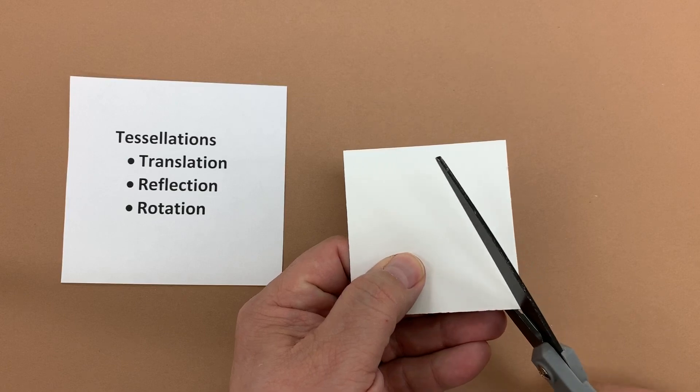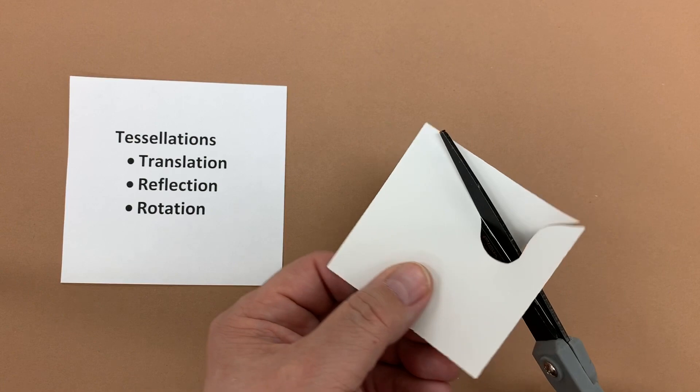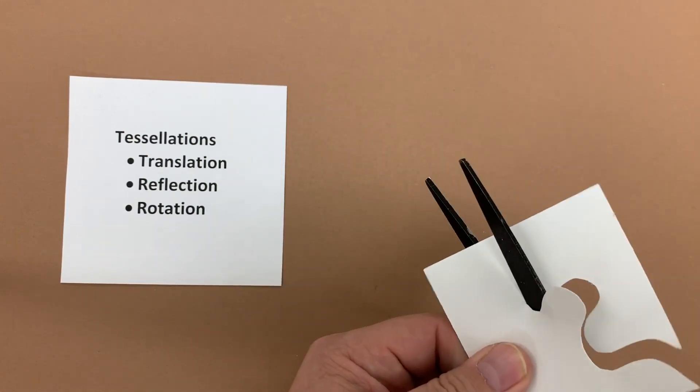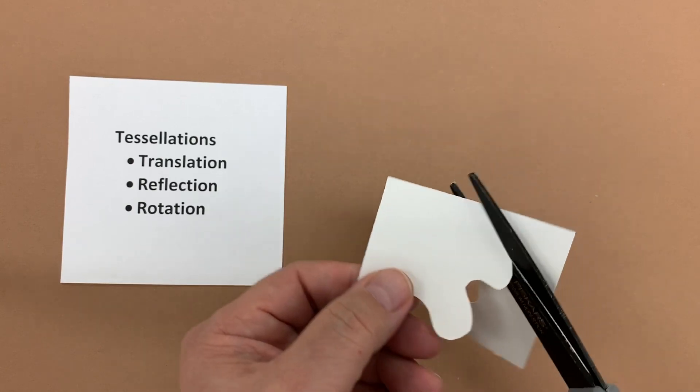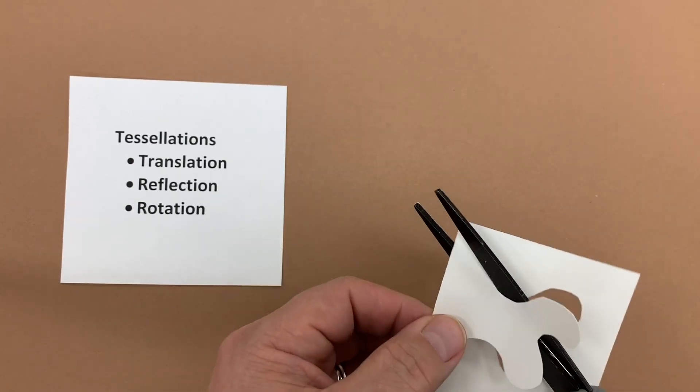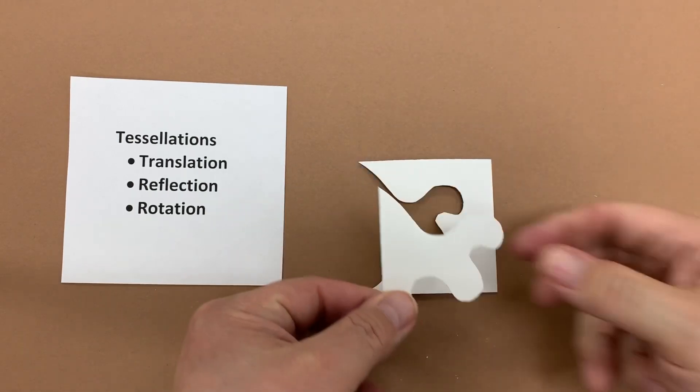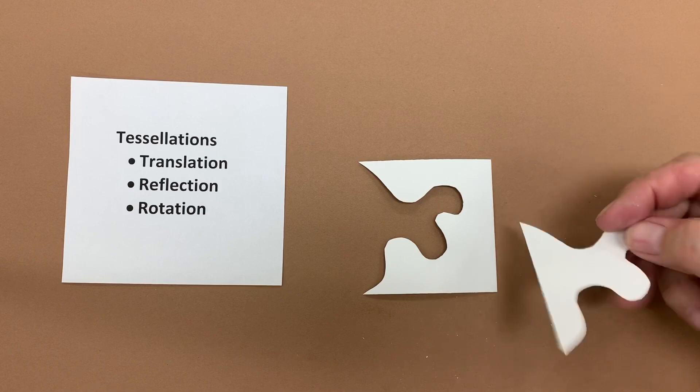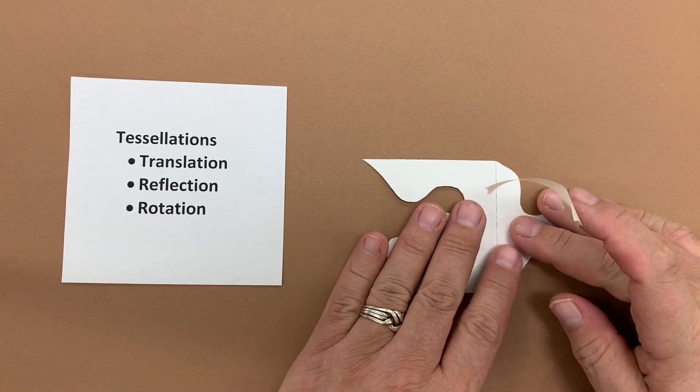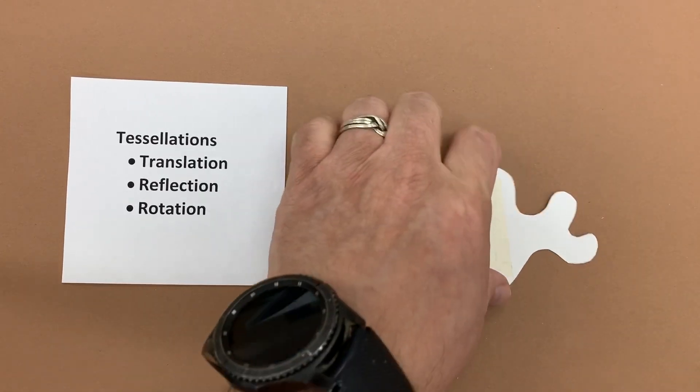So again, I go from one corner and cut to an adjacent corner. Make a wiggle waggle. Bring it back. Again, I'm stopping at an adjacent corner. I bring it over and I flip it. So to do the reflection, we have to flip it.